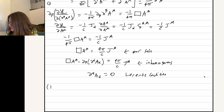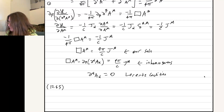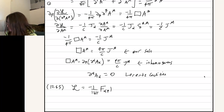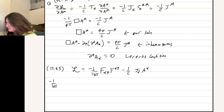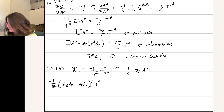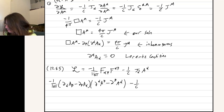Jackson also asks us how this Lagrange density differs from the inhomogeneous Lagrange density that he provides. His form is minus 1 over 16 pi times a couple of field strength tensors, minus 1 over c, j^alpha A_alpha. So expanding the field strength tensors, we have (del^alpha A^beta minus del^beta A^alpha) times (del_alpha A_beta minus del_beta A_alpha), minus 1 over c, j^alpha A_alpha.